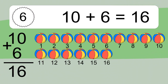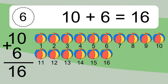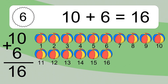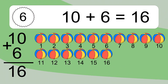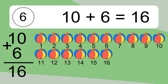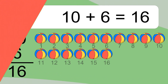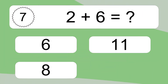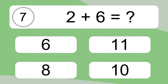10 plus 6 equals 16. Let's count it: 1, 2, 3, 4, 5, 6, 7, 8, 9, 10, 11, 12, 13, 14, 15, 16.